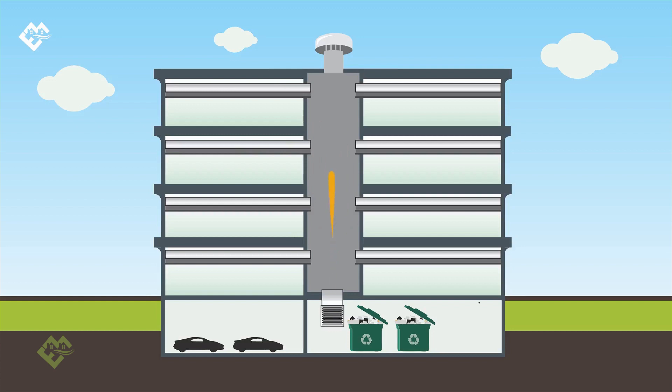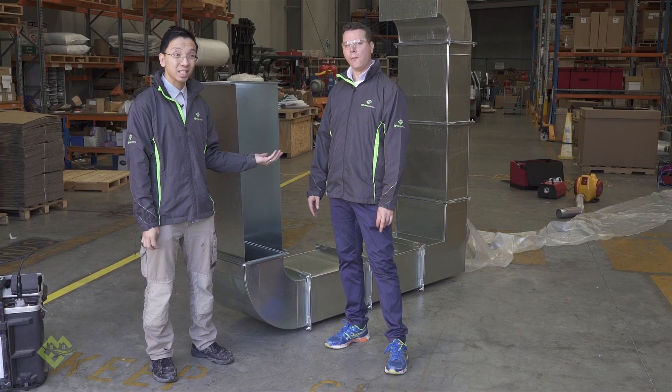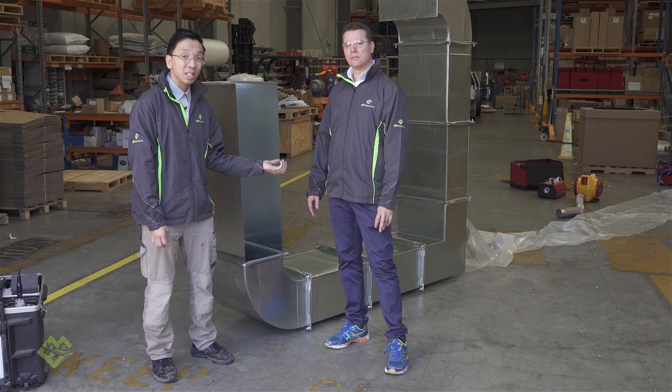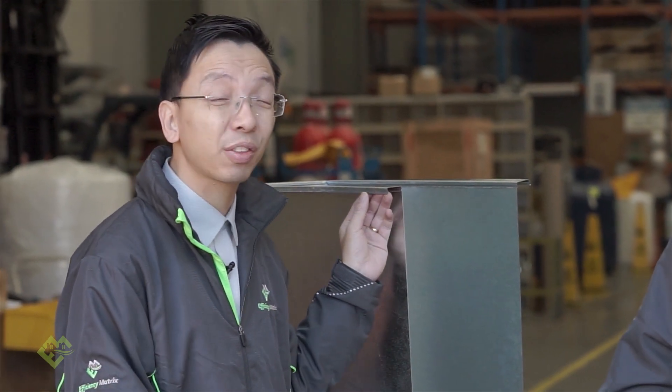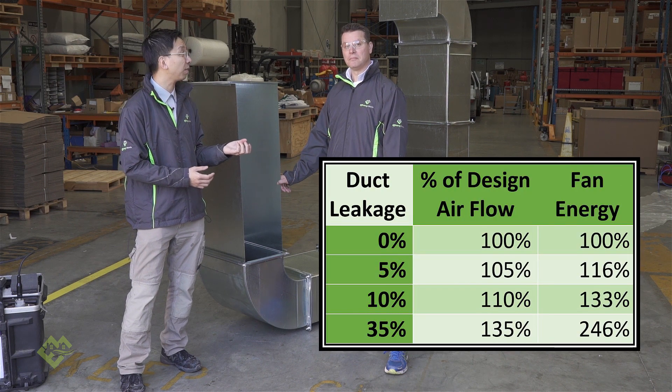What does it mean to have a percentage of leakage in ductwork? Leakage in ductwork is not as straightforward as other forms of wastage because the energy requirement for generating airflow follows a cube rule. A 5% increase in airflow translates to a 17% increase in fan energy, and a 10% increase results in a 37% increase. In some of the worst cases, if your ductwork is leaking at 35%, you are using an extra 140% of energy on top of the original design energy — a huge implication in terms of fan energy requirement.